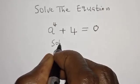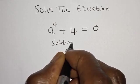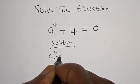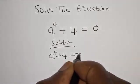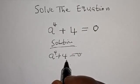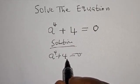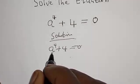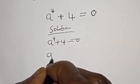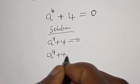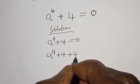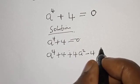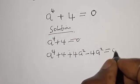Solution. We have the given equation L to the power 4 plus 4 is equal to 0. We are going to manipulate this equation to make it easier to work with. Let's add and subtract 4a squared. Then we have L to the power 4 plus 4 plus 4a squared minus 4a squared equal to 0.